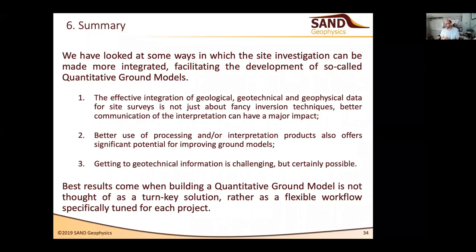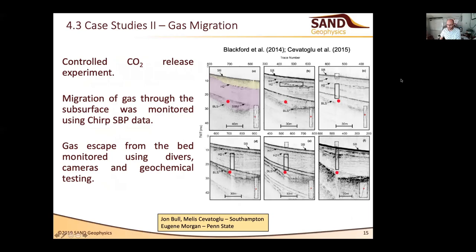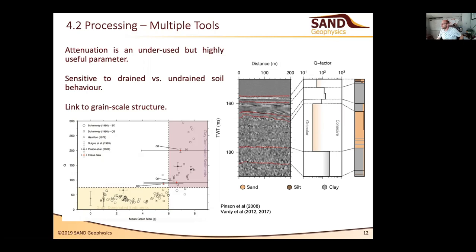Thank you very much, Mark, for very interesting results and quite impressive data sets and sections. We have a bunch of questions. The first question is about slide 12: it appears to indicate that grain size is higher for clay than sand. That's because I'm plotting the mean grain size in terms of phi, not in micrometres — so higher phi is a smaller grain size.